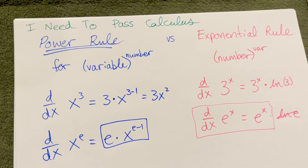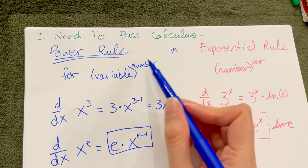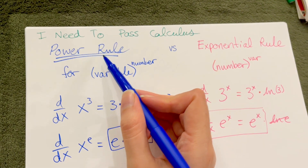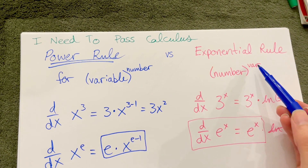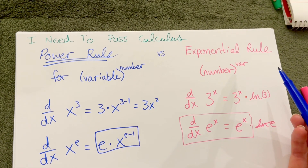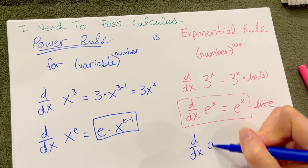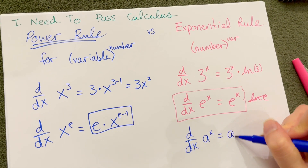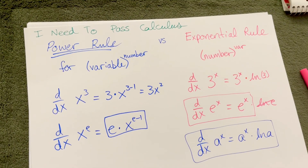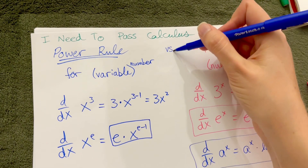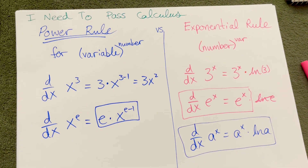So just remember: when you're taking a derivative, the structure of the function matters a lot. If you have a variable as your base and a plain old number on top, use the power rule. If you have a number as your base and a variable as your exponent, use the exponential rule. In general, the derivative of a to the x is a to the x times ln a — you might see this in your book. Make sure to keep these straight; they're two different derivative rules. Let me know if you have any questions in the comments below, and see you next time!